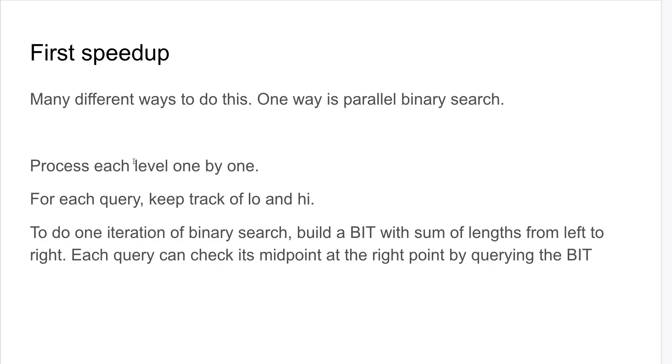So the first one, to speed that up, there are many different ways you can do this. The way I thought would be fastest is thinking about it in terms of parallel binary search, because we can do this all offline. So we'll process each level one by one. And then for each query, we'll keep track of the lower bound and upper bound of where we think this value will be.